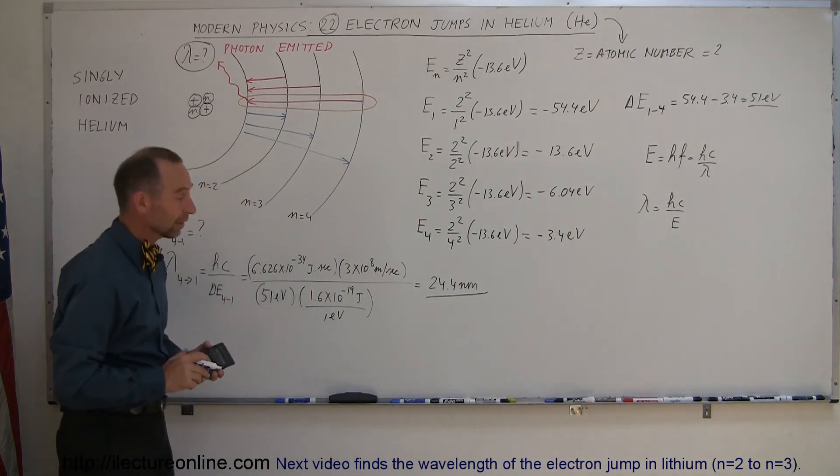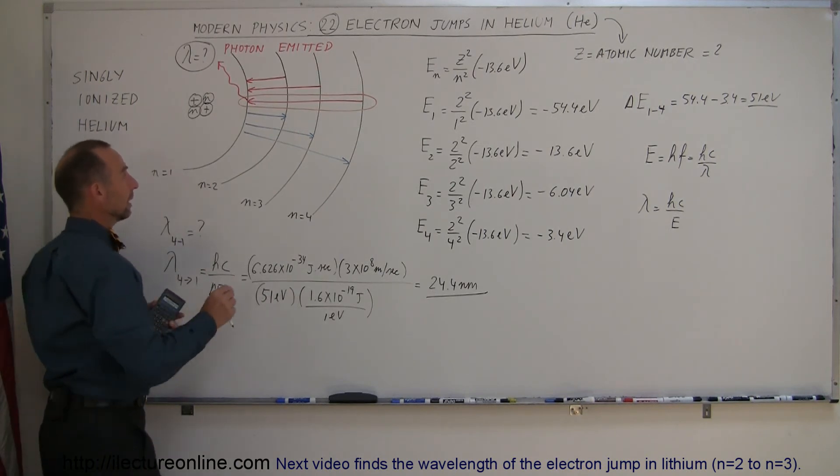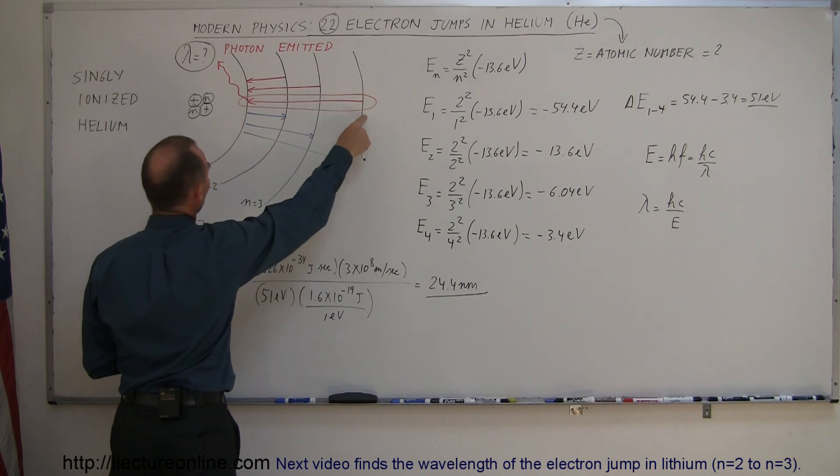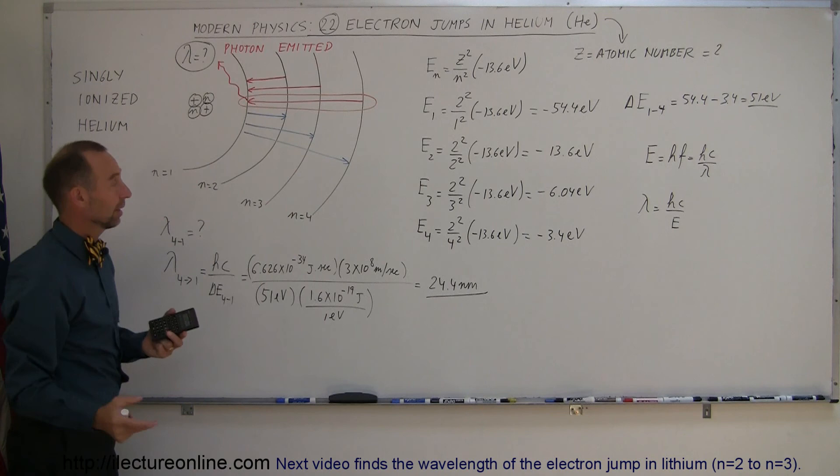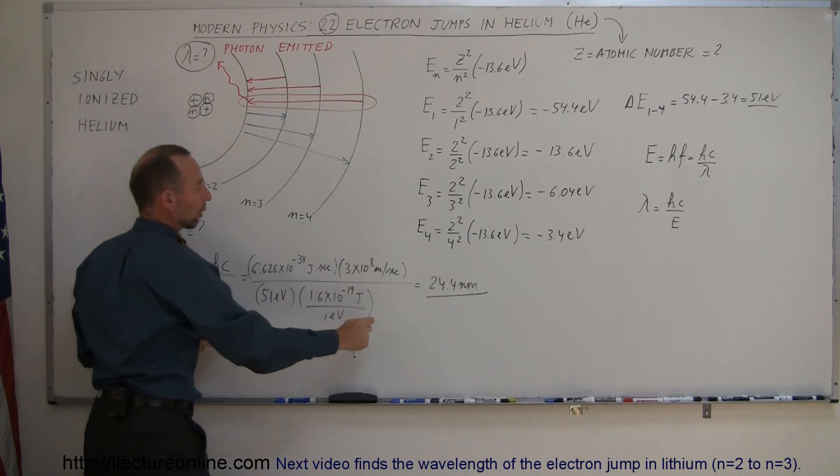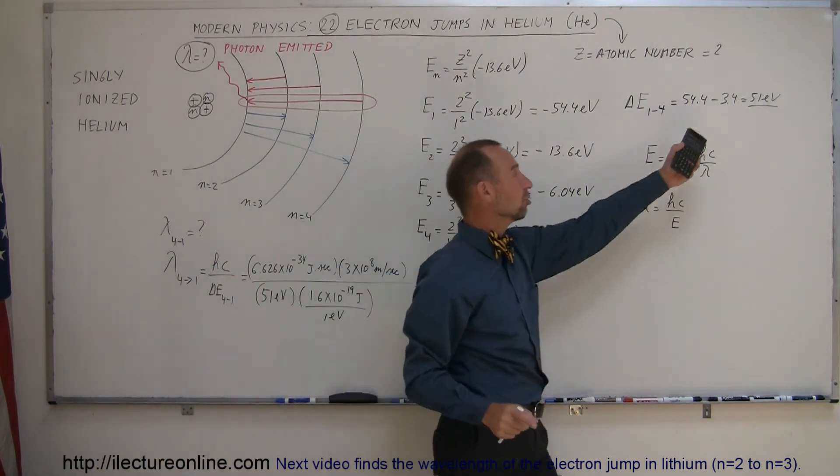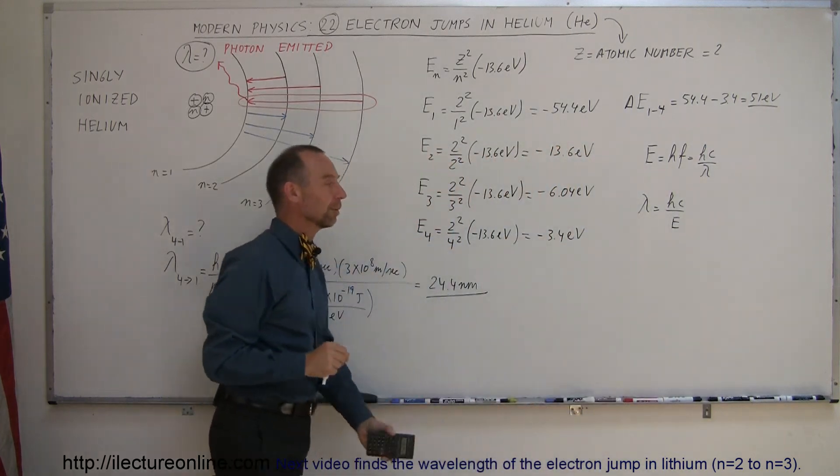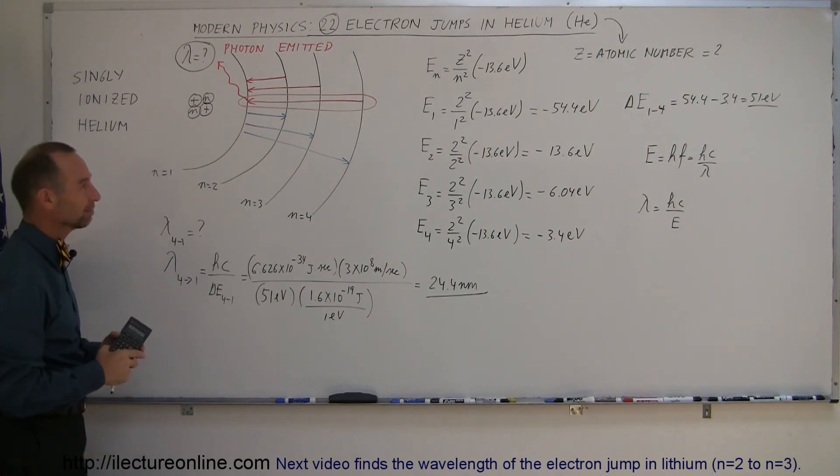That's a pretty short wavelength. That is pretty high energy ultraviolet radiation. And so if an electron jumps from the fourth level down to the first level, it will emit a photon of this wavelength. Likewise, if an electron resides in the first energy level, what photon is required to make it jump to the fourth level? It requires a photon of this exact wavelength, of that exact energy, in order to make that jump possible. And that's how you deal with quantum jumps or electron jumps in the helium atom.